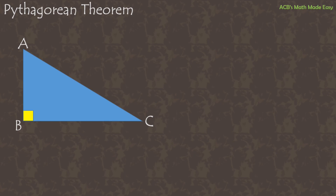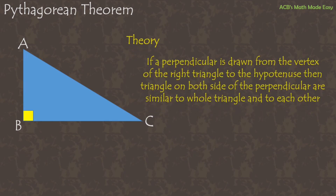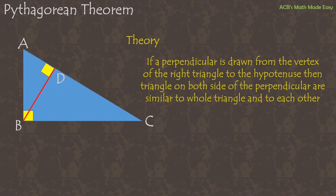This is the triangle similarity theory: if we draw a perpendicular line from the vertex of the right triangle to the hypotenuse, the triangles on both sides of the perpendicular are similar to the whole triangle and to each other. We can draw that line from the vertex of the right triangle perpendicular to the hypotenuse, and we are going to name that point D.